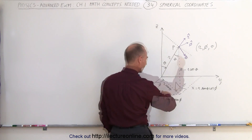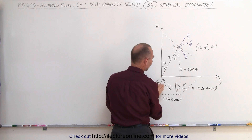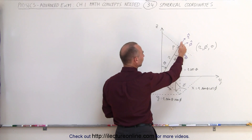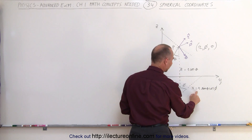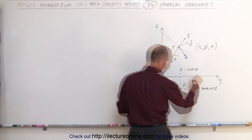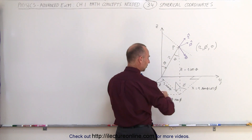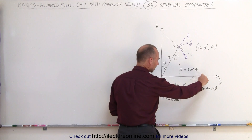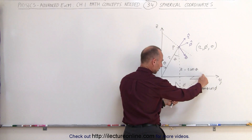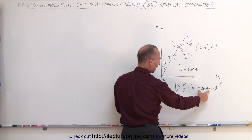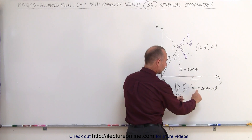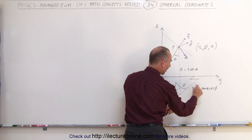The distance from the point in space to the y-axis is the x-component. This right triangle has a 90-degree angle here. The x distance from the y-axis to this point equals the hypotenuse R sine theta times the cosine of the adjacent angle phi. So x equals R sine theta cosine phi.